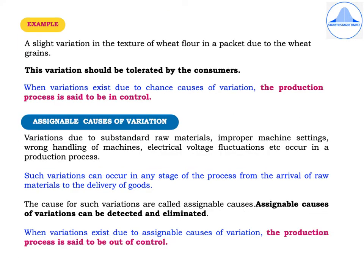Since chance variations cannot be eliminated, one has to tolerate them — this is called natural tolerance. For example, a slight variation in the texture of wheat flour in a packet due to the wheat grains is a variation that should be tolerated by consumers. Similarly, there may be a small variation in the amount of milk in ml across different packets. When variations exist due to chance causes, the production process is said to be in control.